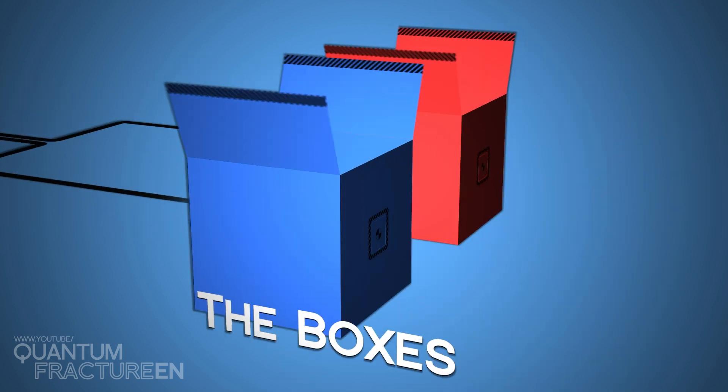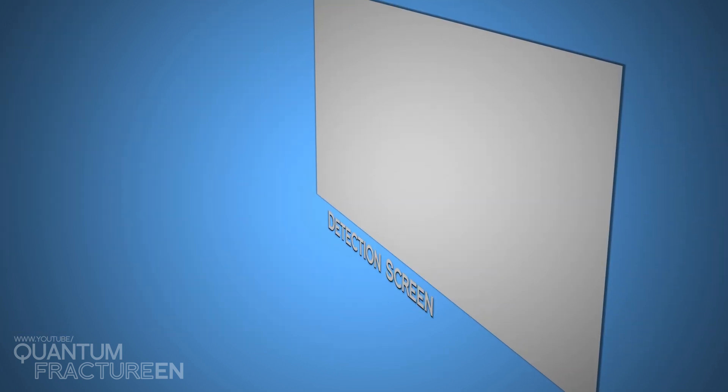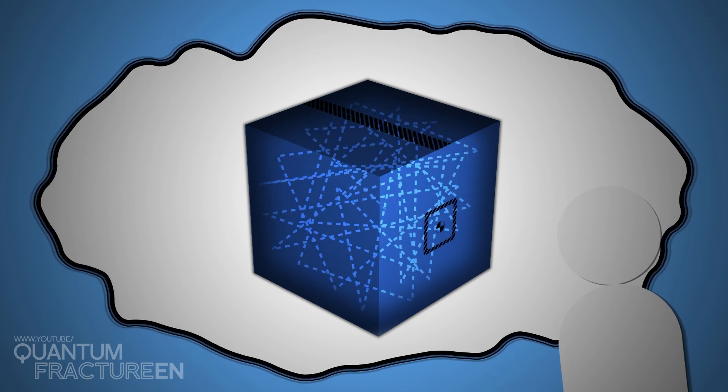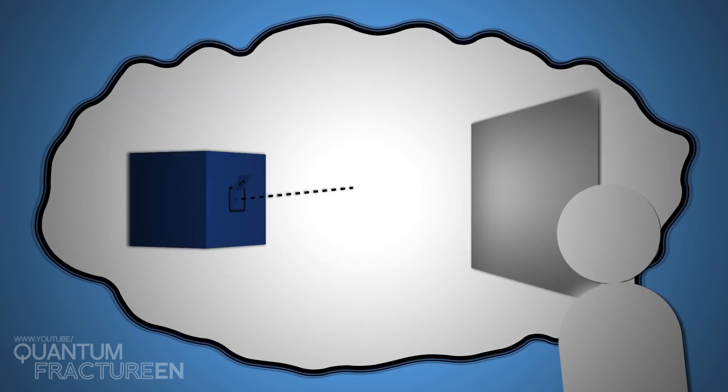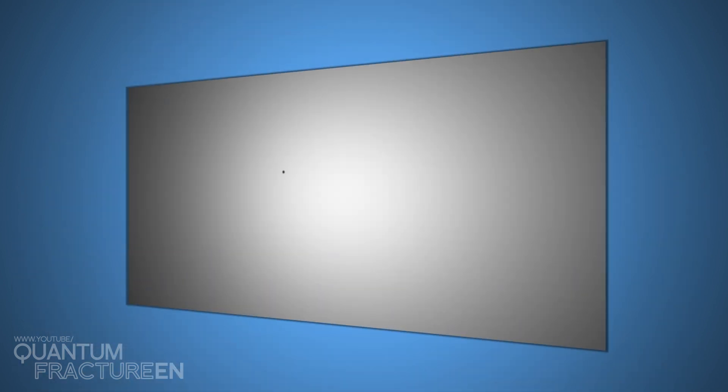They have two openings – one on top, so we can insert the detector to determine if the atom is inside or not, and one on the side, facing a detection screen. The atom inside the box is constantly moving, bouncing off the walls. If we uncover the side opening, the atom will shoot out and hit some point on the screen. A mark will appear on that spot, telling us exactly where the agitated atom landed.